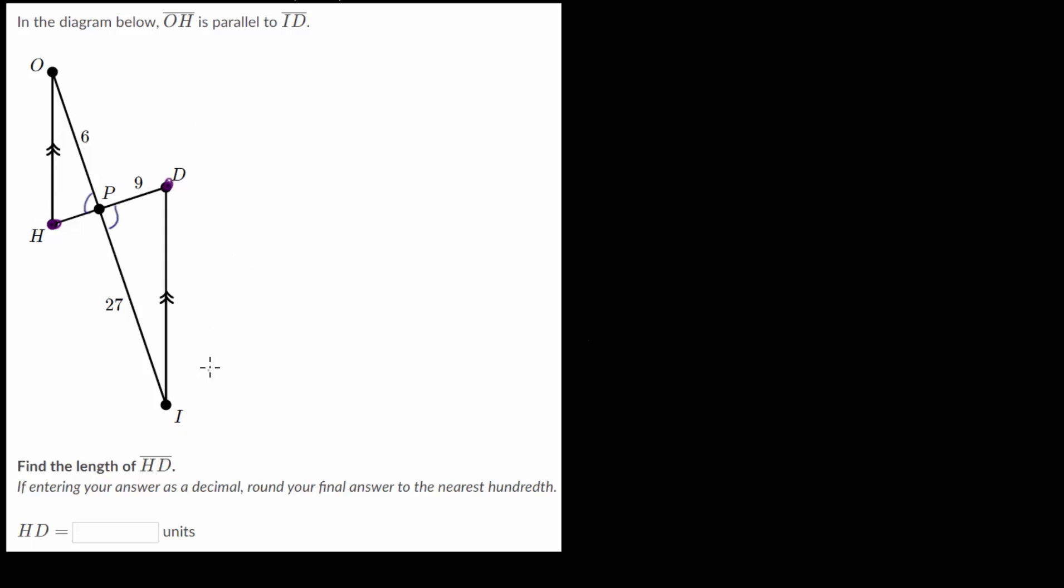And with parallel lines, remember that you have these two lines and a transversal, a line that crosses between the two parallel lines. And within these parallel lines, we know that alternate interior angles are equal, which means that this angle right here, HOP, is equal to this angle right here, DIP.